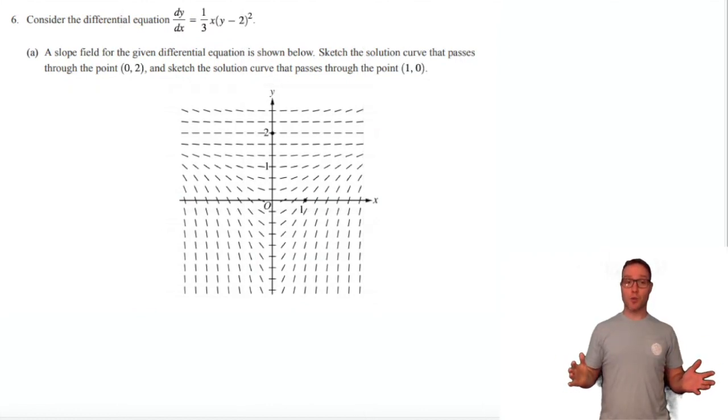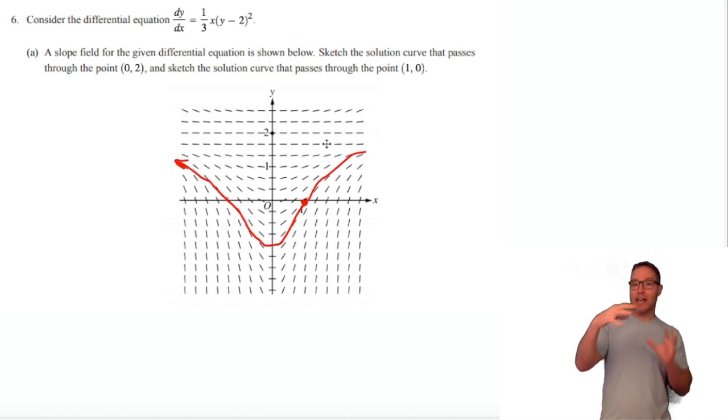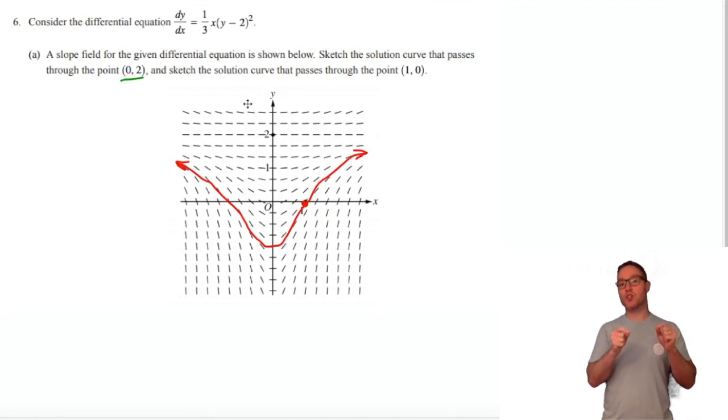Part A gives us a differential equation and a slope field. They want us to sketch the solution curve that passes through two points: (0,2) and (1,0). I'm going to draw the one first that goes through (1,0). I plotted the point and now what you do is just follow the flow pattern of these slopes. I picture if I was on a raft and the slopes represent the current, what path would you follow? You don't want to just cross any slope dash if you can avoid it. Now I'm drawing the solution curve through the point (0,2) which is just a horizontal line.